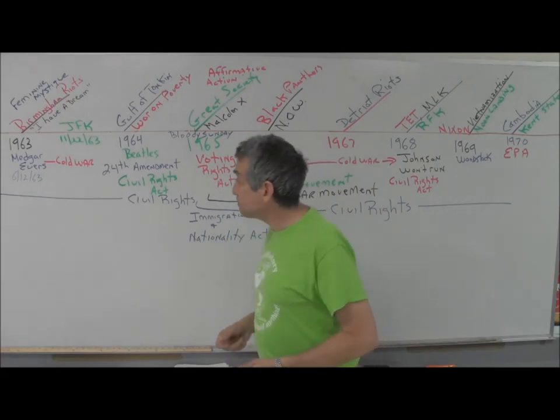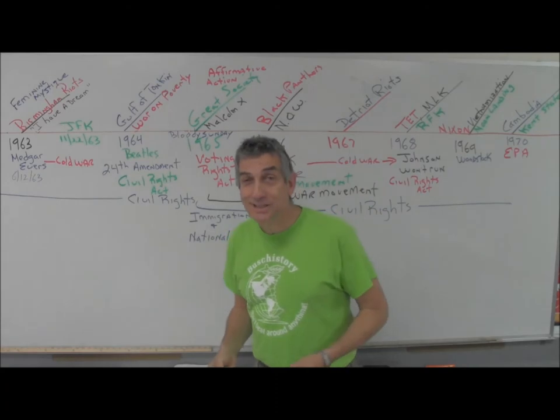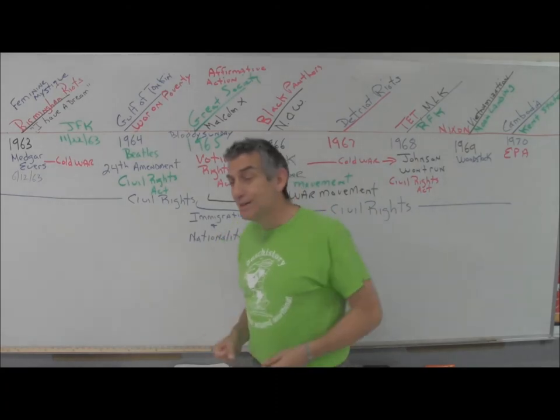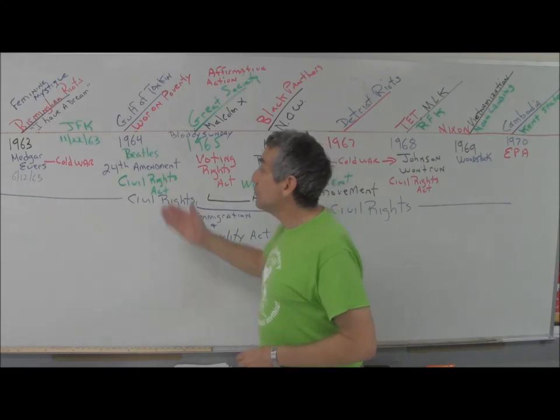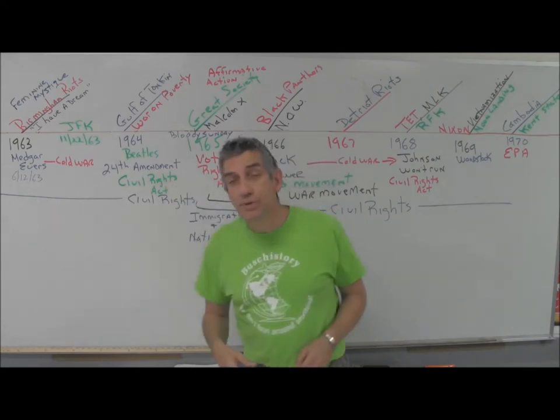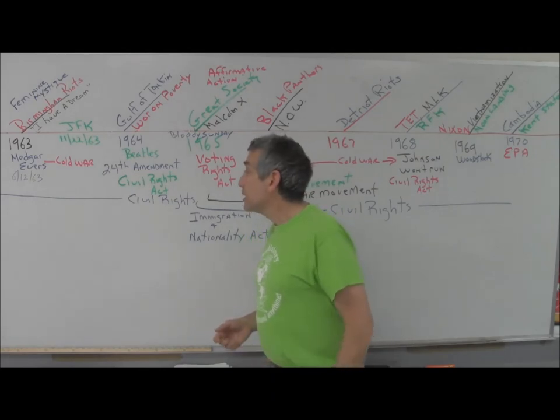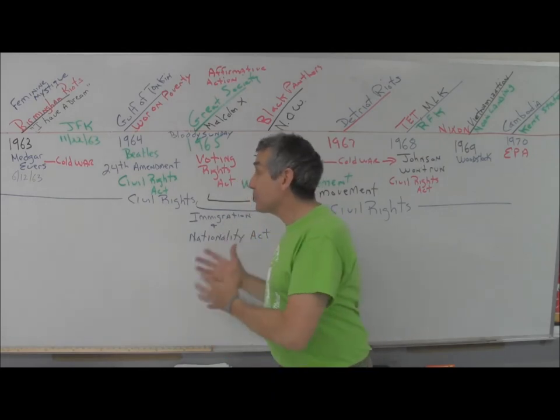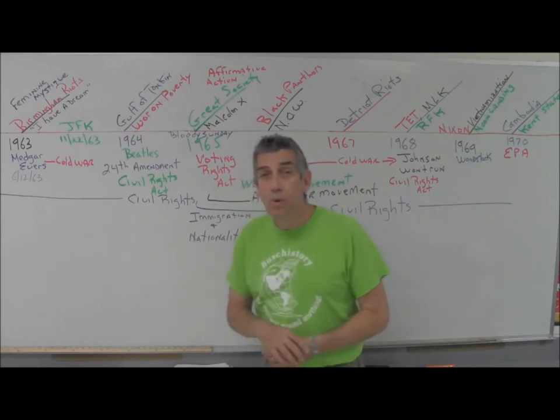On the cultural side, the Beatles come to the United States in 1964 for a little bit of levity. The 24th Amendment will pass in 1964, outlawing poll taxes as the civil rights movement continues. We get the first of a series of Civil Rights Acts passed in 1964, dealing with voter procedures.